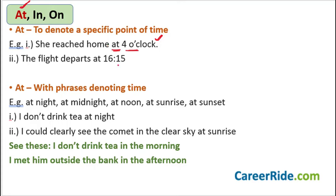Similarly, 'The flight departs at 1615,' which is again a specific time. Whenever you are using any phrases that denote specific time, then also you use 'at.' For example: at midnight, at noon, at sunrise, at sunset — with all these phrases you use 'at.'